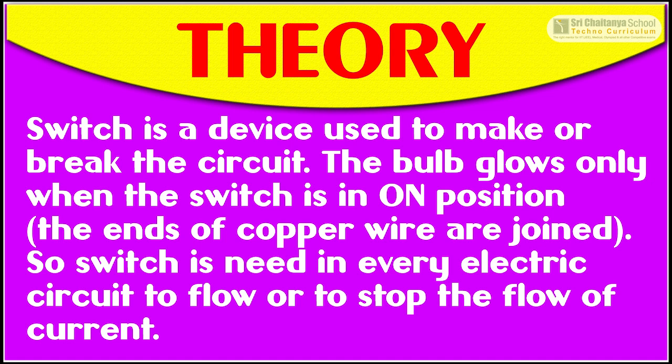The theory of this experiment is: a switch is a device used to make or break the circuit. The bulb glows only when the switch is in the ON position. So a switch is needed in every electric circuit to allow or stop the flow of current.